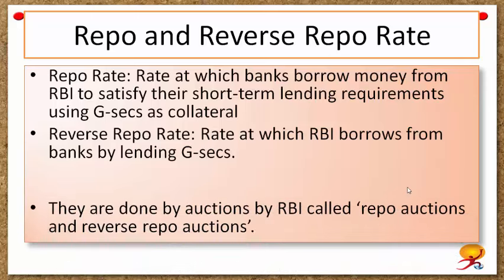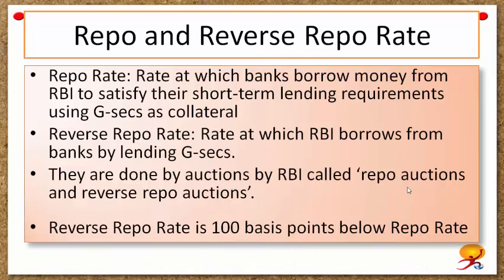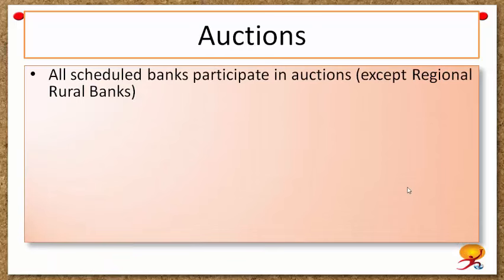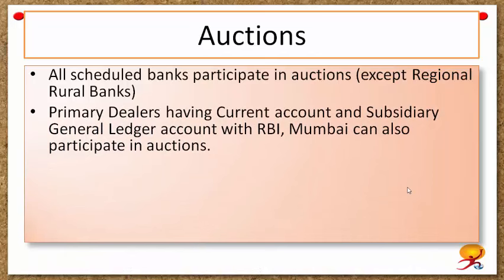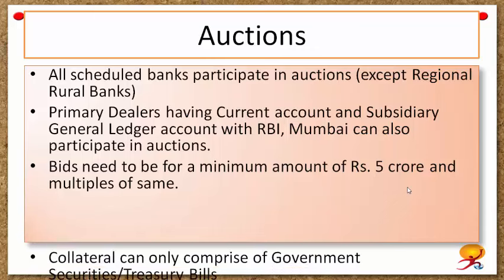These transactions are done by auctions held by RBI under the names of repo auctions and reverse repo auctions. The reverse repo rate is 100 basis points below the repo rate. All scheduled banks can participate in these auctions except regional rural banks. Primary dealers having a current account and a subsidiary general ledger account with RBI Mumbai can also participate. The minimum bid amount is rupees 5 crores and in multiples thereof.